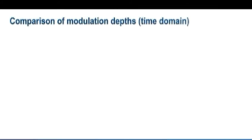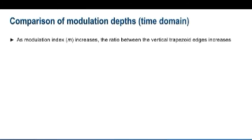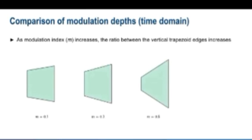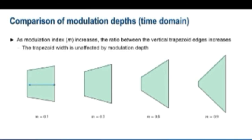The shape of the trapezoid changes as we change the modulation index. As modulation index increases, the left edge of the trapezoid shrinks, increasing the ratio between these two edges. Note, however, that the width of the trapezoid is unaffected by modulation depth.